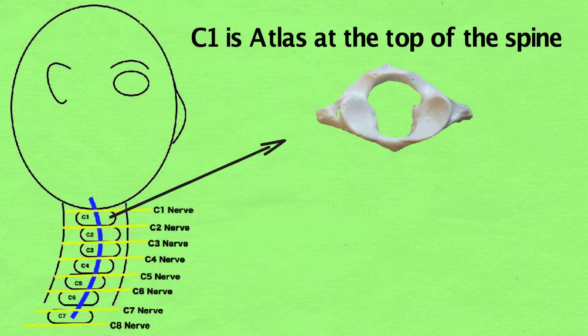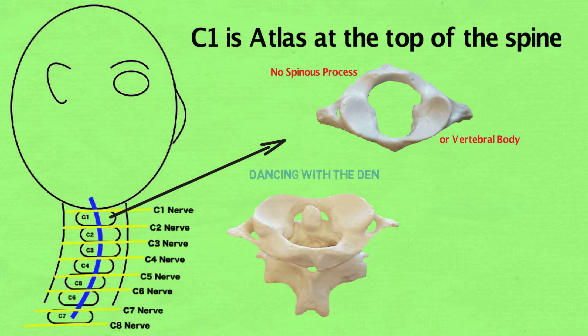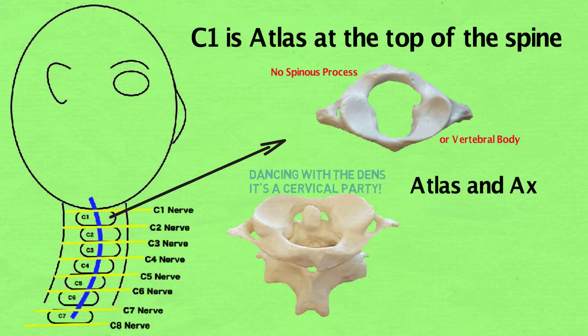C1 is Atlas, the top of the spine. No other vertebra has a typical vertebral body.